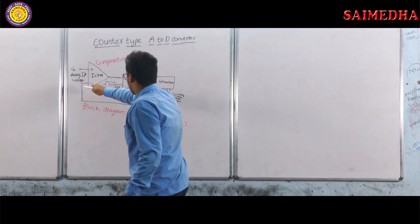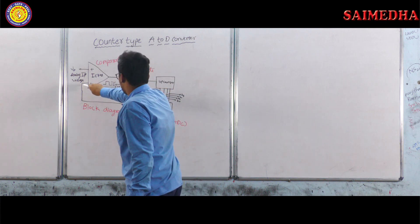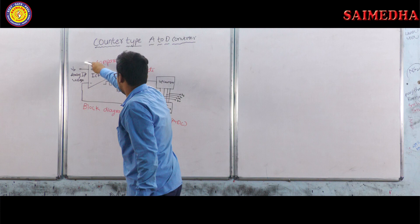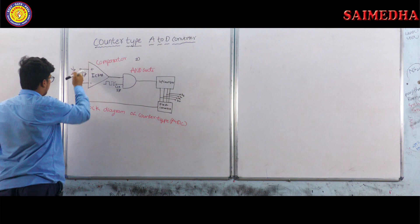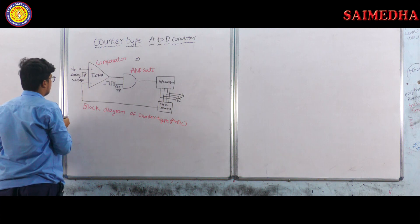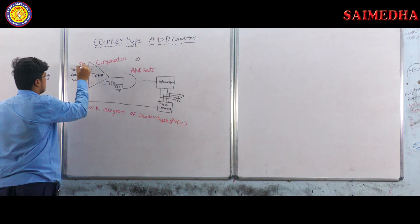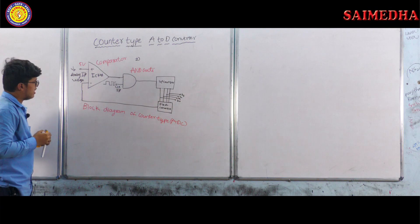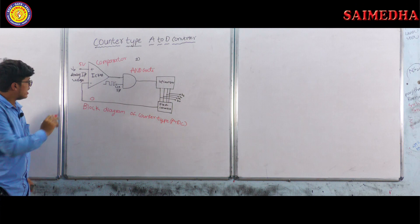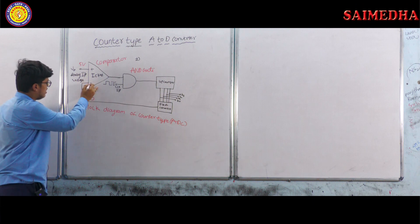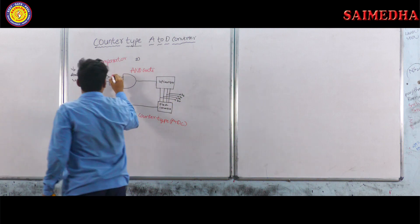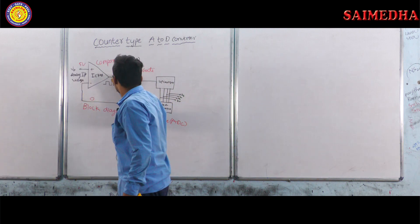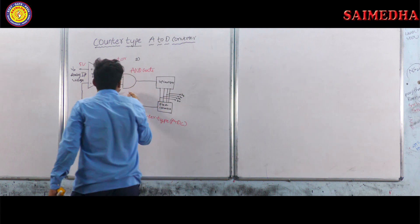For the operation, when we apply five volts as input, initially the feedback voltage is zero volts. Since the inverting terminal voltage is less than the non-inverting terminal voltage of five volts, the comparator gives logic one as its output.